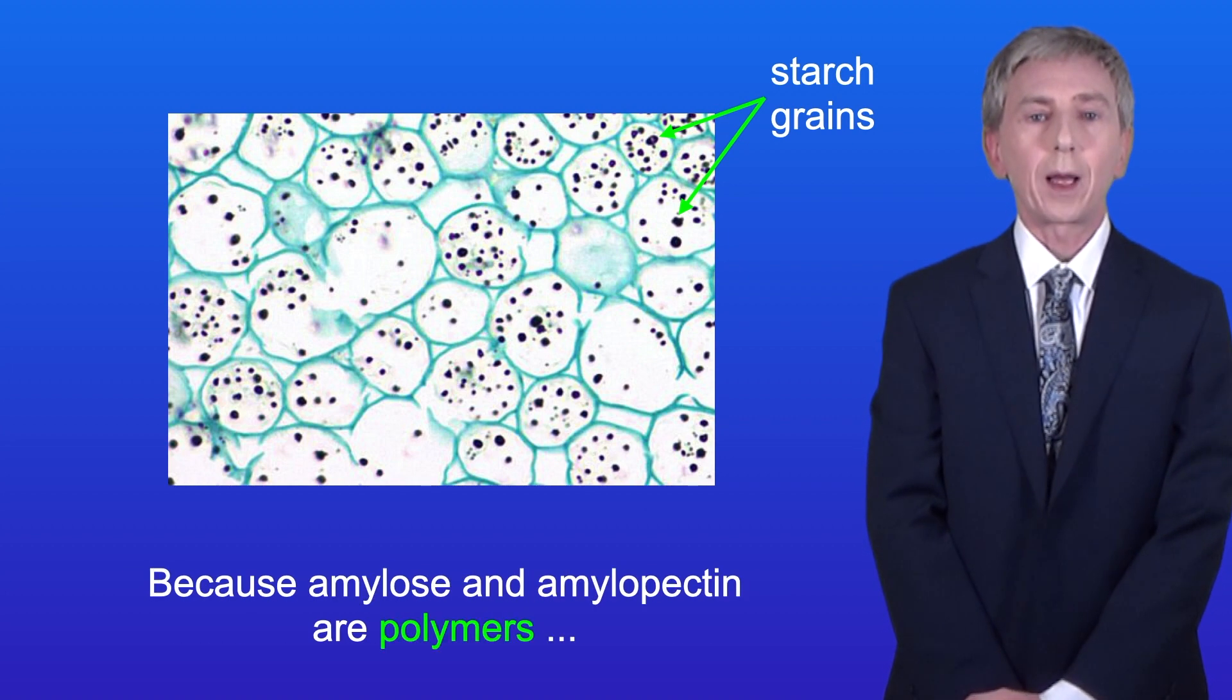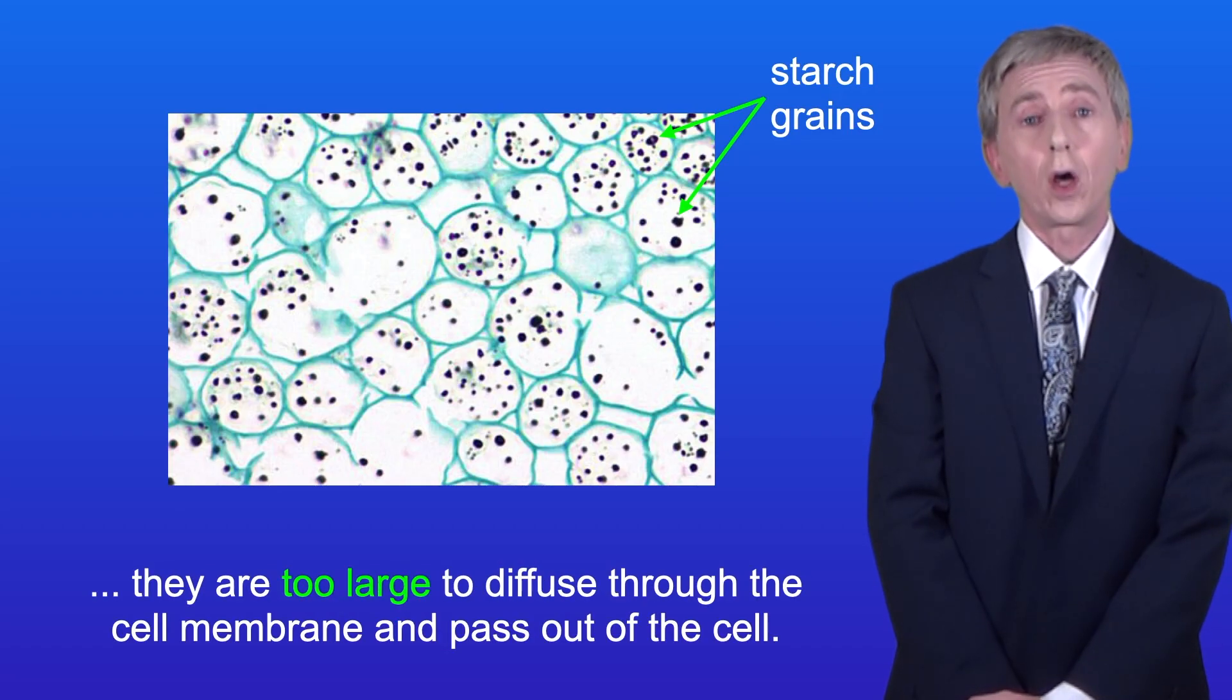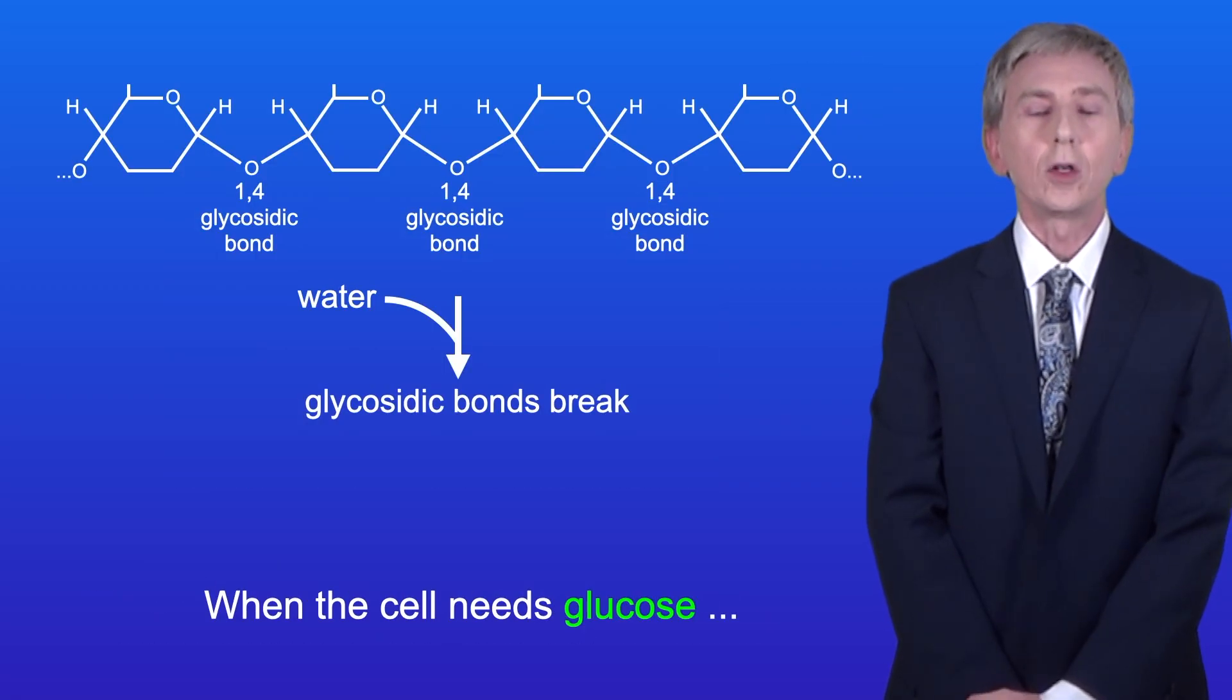Because amylose and amylopectin are polymers, they're too large to diffuse through the cell membrane and pass out of the cell. Now when the cell needs glucose, enzymes are used to break the glycosidic bonds in starch.